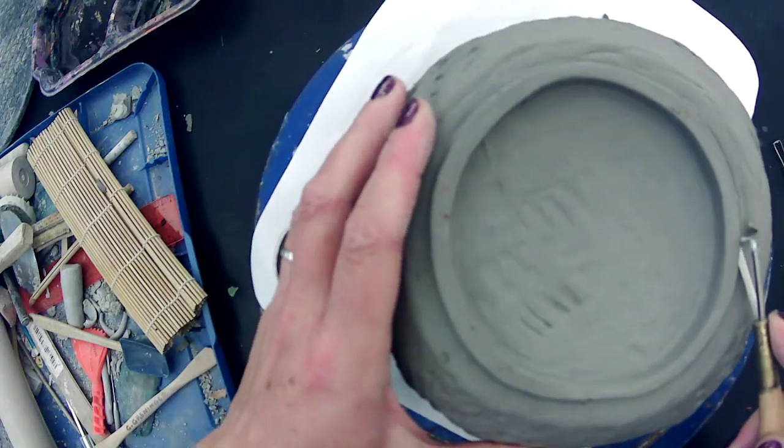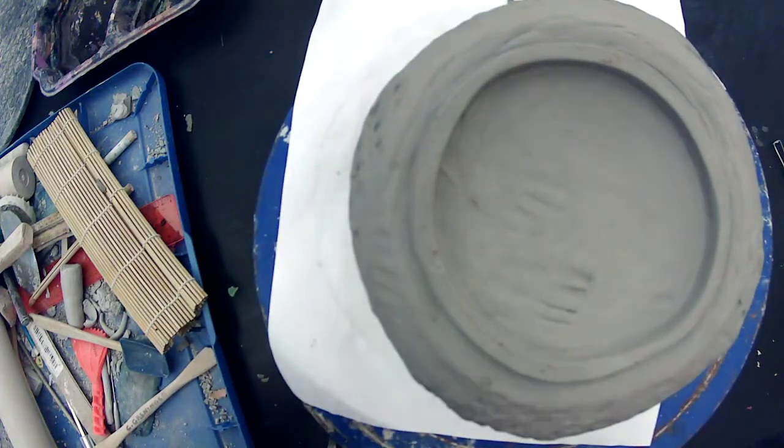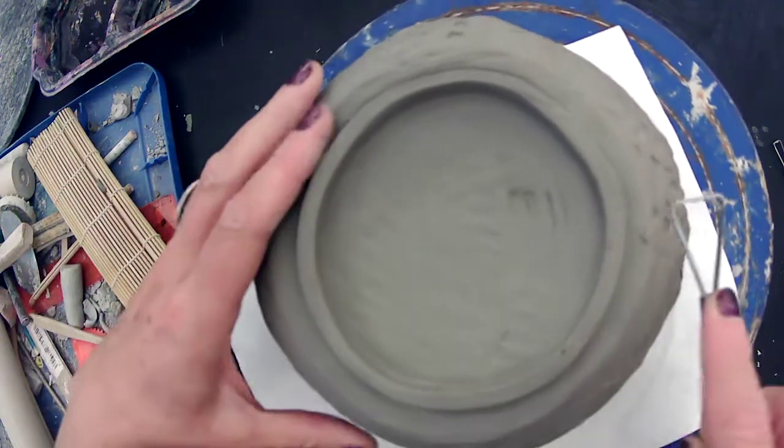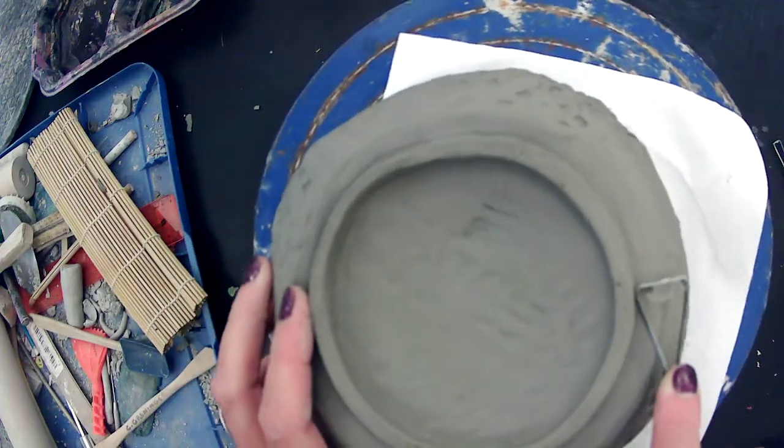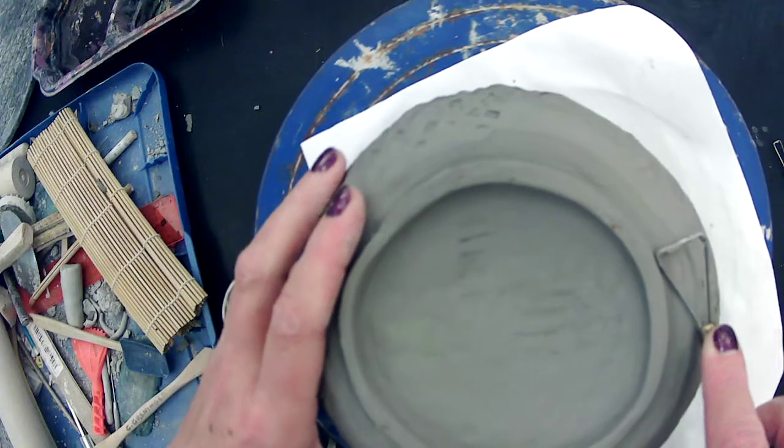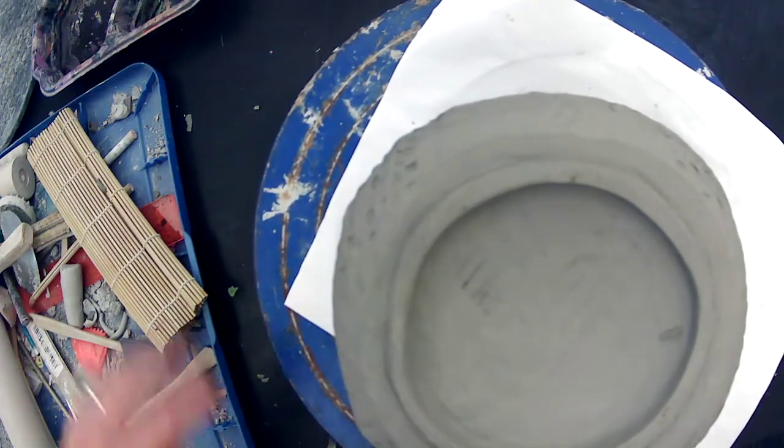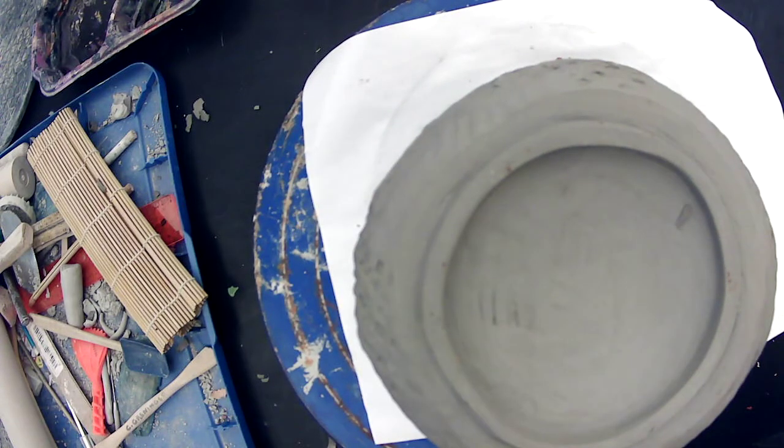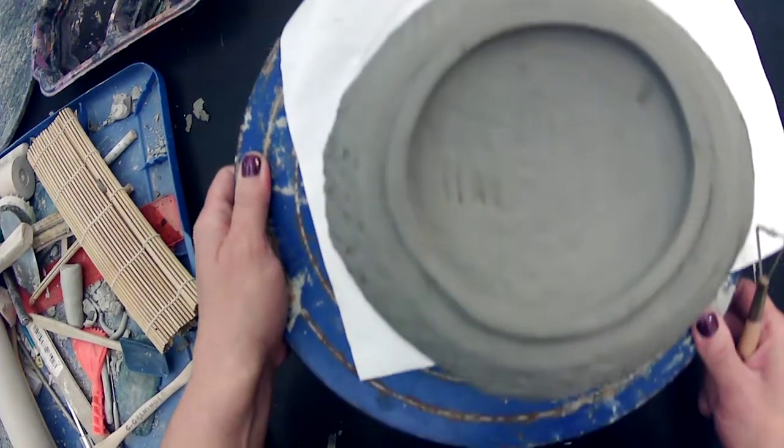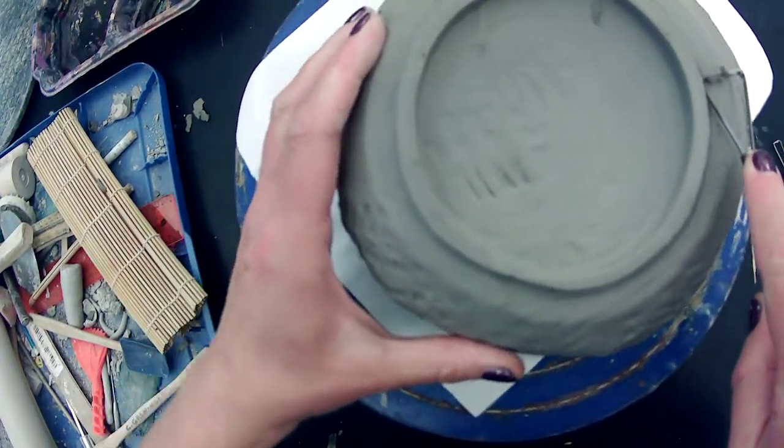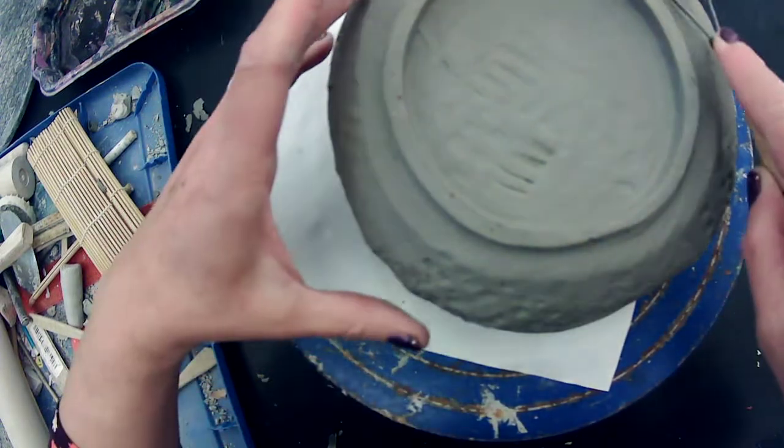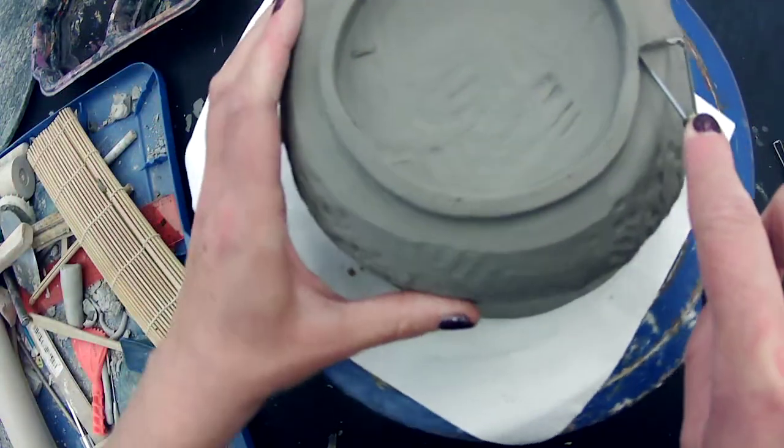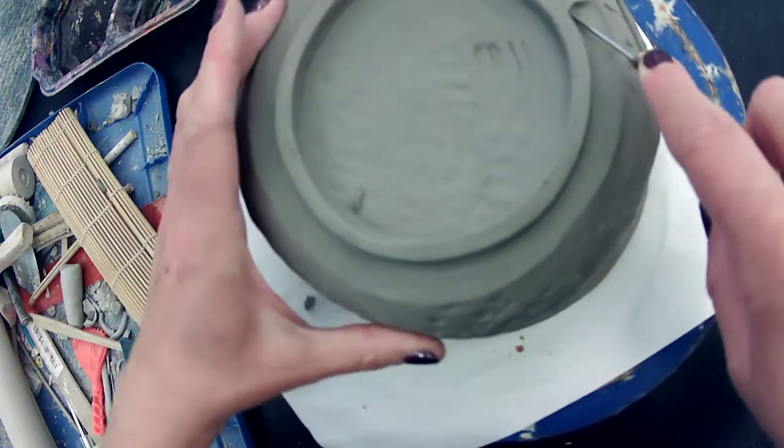This puts a nice little flat edge on the side too. You know your clay is in a good state for carving when it just ribbons off like that and it's not sticking anymore. All of these details make a huge difference in the finished look of your piece and the perception of your technical skill.